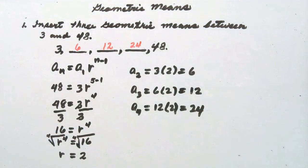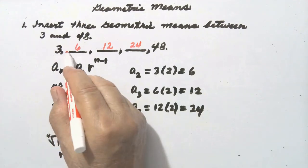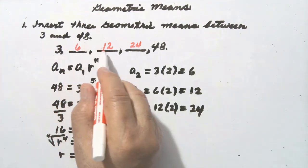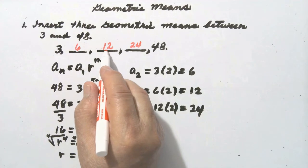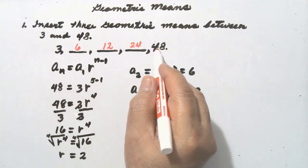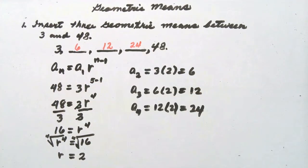Let us check. The common ratio is 2: 3 times 2 is 6, times 2 is 12, times 2 is 24, times 2 is 48. Verified.